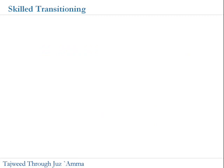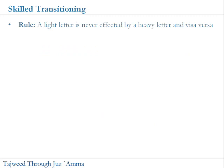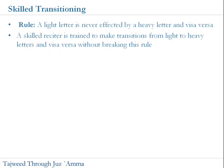Now we'll talk about something called skilled transitioning. The rule is: a light letter is never affected by a heavy letter and vice versa. A skilled reciter is trained to transition from light to heavy letters and vice versa without breaking this rule. A common mistake for those not properly trained is that when combinations of light and heavy letters appear together, the light letters suddenly become a bit too heavy — this is something a trained teacher will pick up.